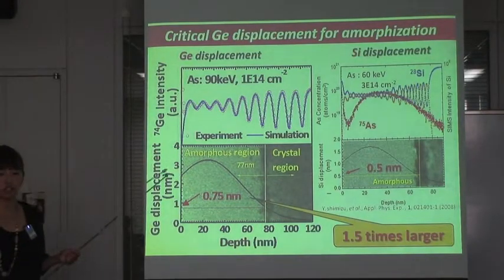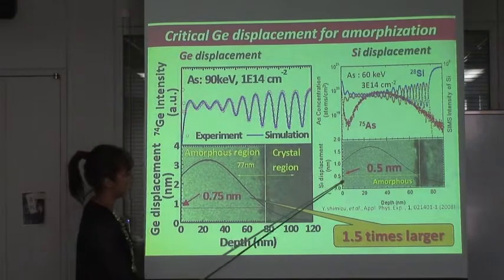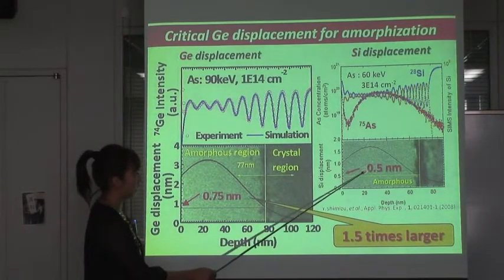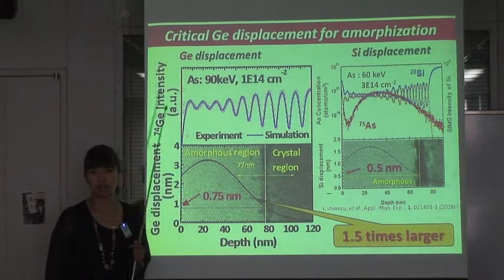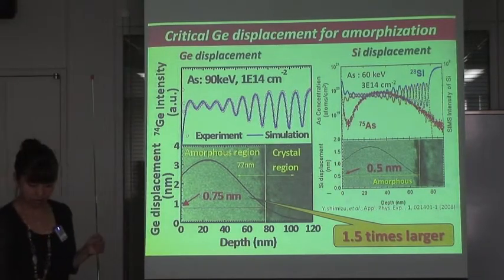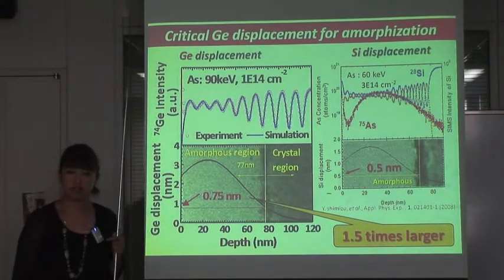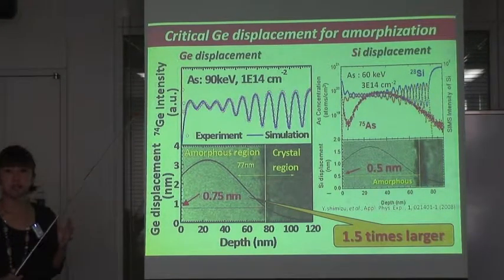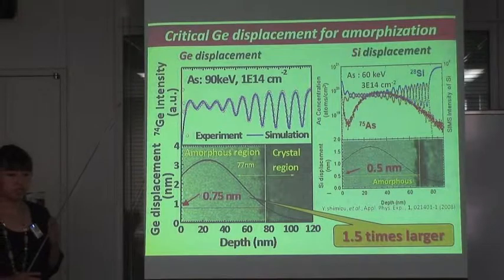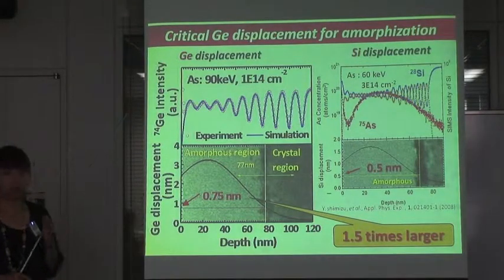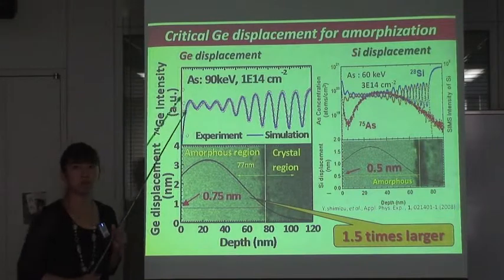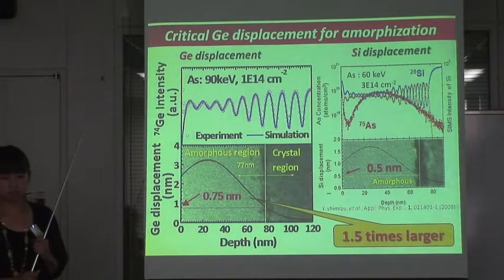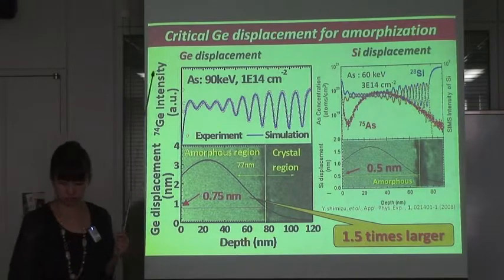This value is 1.5 times larger than that of silicon, which was previously reported to be 0.5 nanometers by Dr. Shimizu. We suggest this is because Germanium atoms that recoil from lattice points are more easily reallocated on other lattice points than silicon, as the Germanium binding energy is smaller than that of silicon.